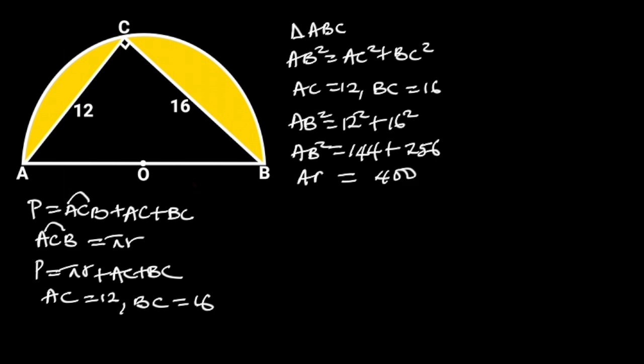So, AB squared is equal to 400. Taking the square root of both sides will give us AB is equal to 20. Since AB is the diameter of the semicircle, the radius will be AB over 2. Since AB is equal to 20, the radius will be 20 divided by 2, which is equal to 10.